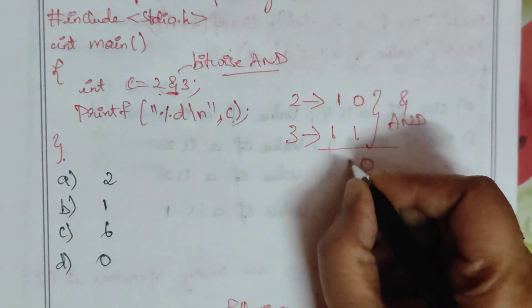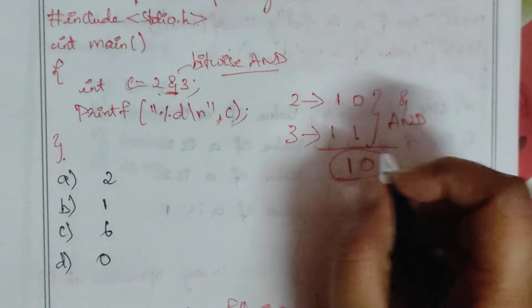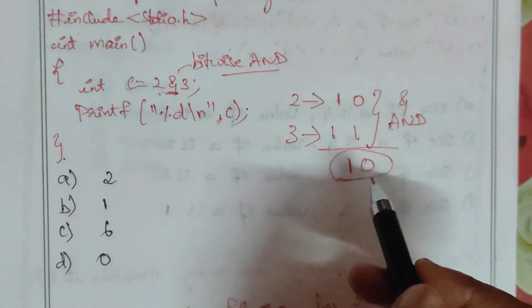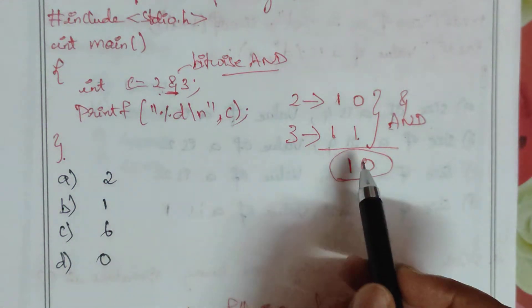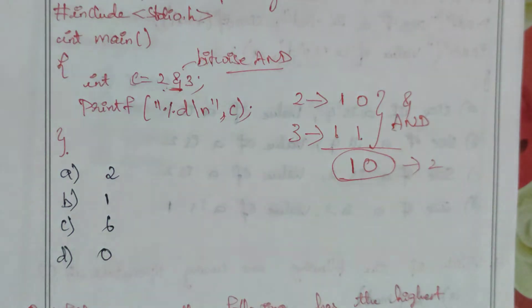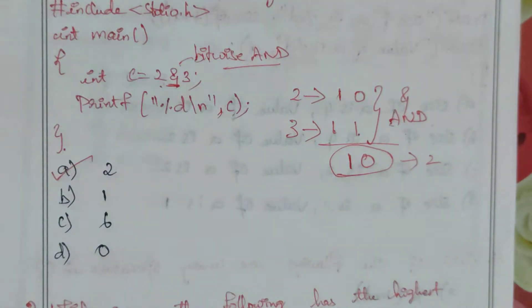This is the result. The options are in decimal, so we convert the binary values to decimal. The value is 2. So the correct option, a, is the right answer.